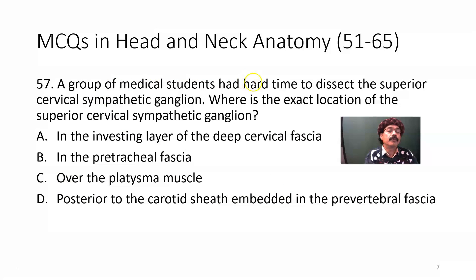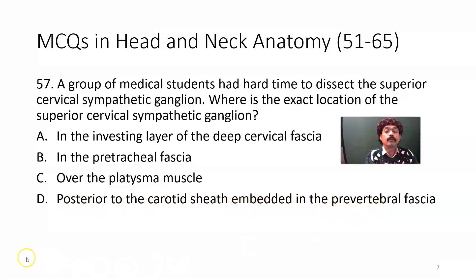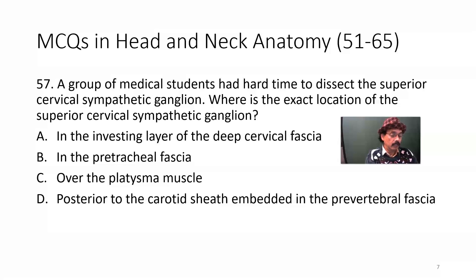A group of medical students had a hard time dissecting the superior cervical sympathetic ganglion. What is the exact location of the superior cervical sympathetic ganglion? In the investing layer of the cervical fascia; in the pre-tracheal fascia; above the platysma muscle; or posterior to the carotid sheath, embedded in the pre-vertebral fascia? The answer is D — posterior to the carotid sheath, embedded in the pre-vertebral fascia. It is deeply located; the dissector should go behind the carotid sheath in the upper part. The ganglion is very large but embedded in the pre-vertebral fascia, located behind the carotid sheath.